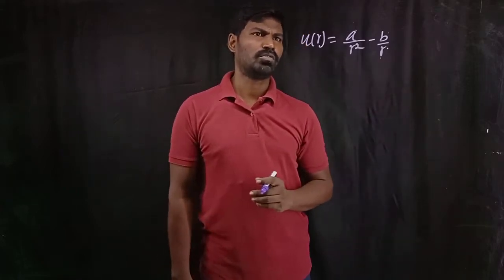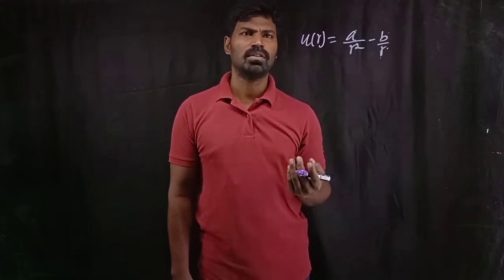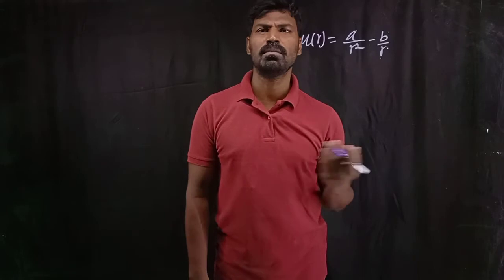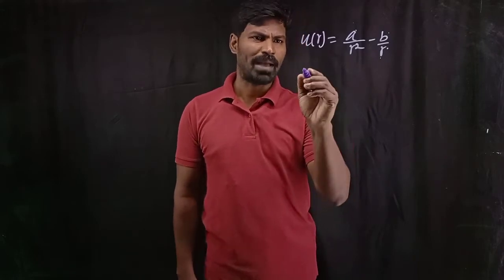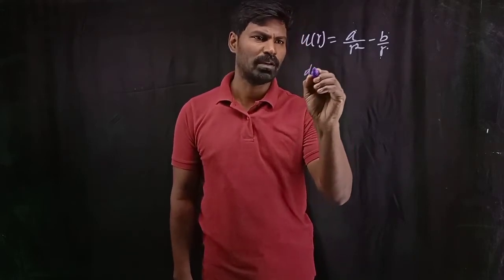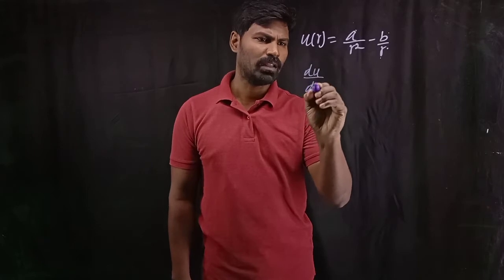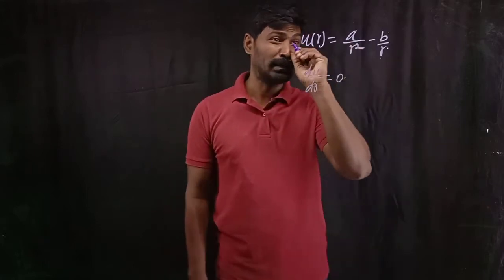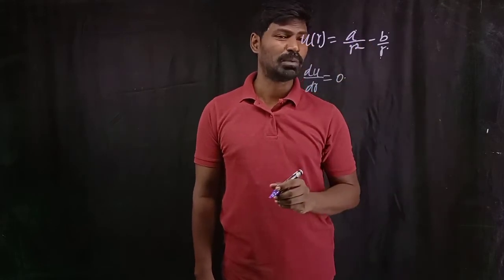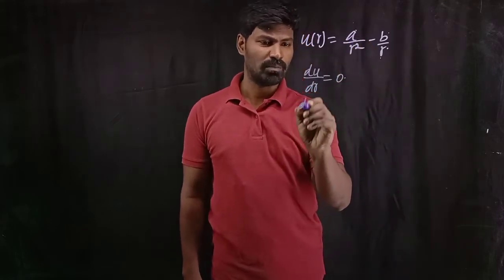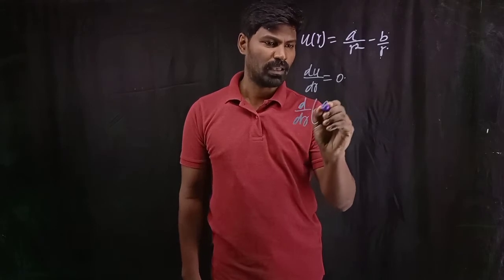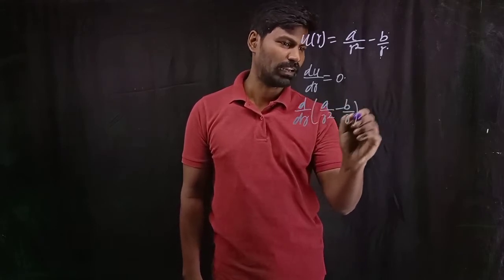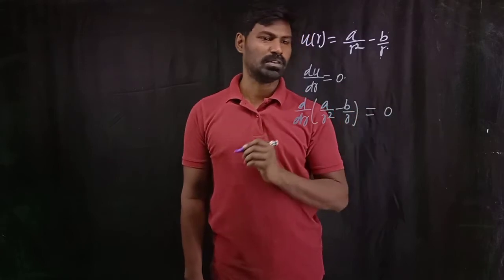To analyze this, first I should find out the stable point. A stable point means minimum potential energy. So for maxima and minima, dU divided by dR should be equal to 0. So I'm calculating that here — differentiating U with respect to R. Therefore, d/dR of (A/R² minus B/R), I should calculate and equate it to 0.